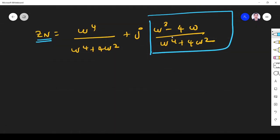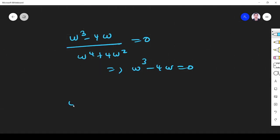So I equate this part equal to zero. So (ω³ - 4ω)/(ω⁴ + 4ω²) = 0. This implies ω³ - 4ω = 0. Take ω outside...